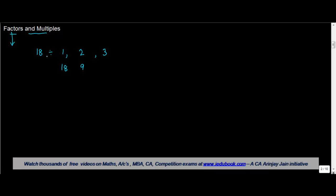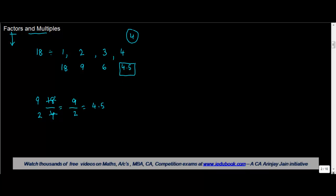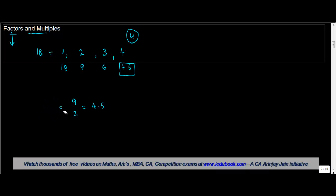If you divide 18 by 3 you will get 6. Now, can 18 be divided by 4? If you divide 18 by 4, let's simplify — 2 into 9 is 18 and 2 into 2 is 4, giving us 9 upon 2. If you divide this, 9 divided by 2 will give you 4.5. So we can divide 18 by 4, but the answer we get is 4.5.